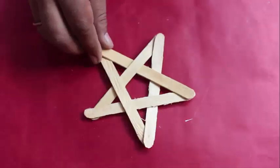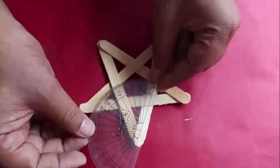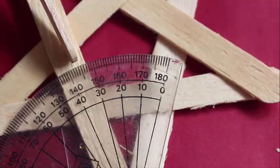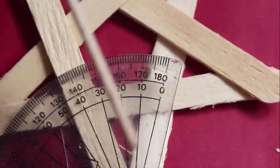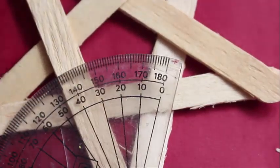You can see the underside of this structure. The angle between the two sticks in one corner would be 36 degrees.